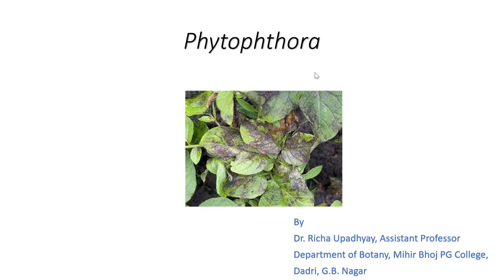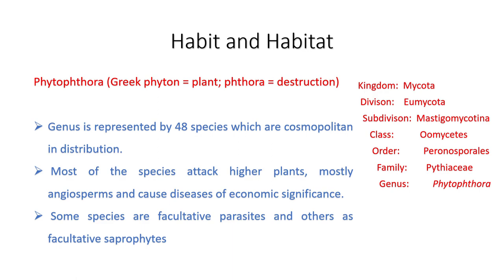Hello everyone, today I am going to explain about an important plant pathogenic fungus, Phytophthora. The word Phytophthora is derived from two Greek words: phyton means plant and thora means destruction. This genus Phytophthora is mainly responsible for the destruction of a number of economically important plants, and it mainly affects higher plants — angiosperms — particularly members of the Solanaceae family.